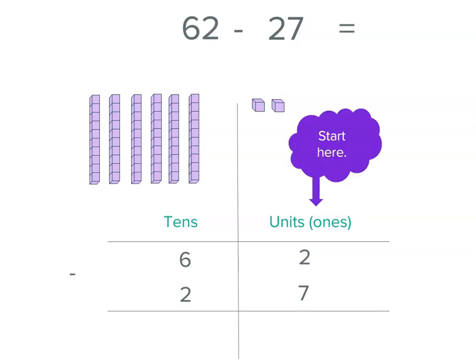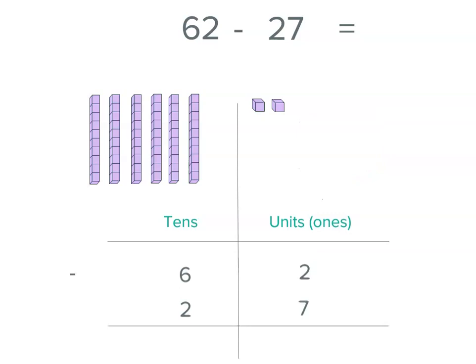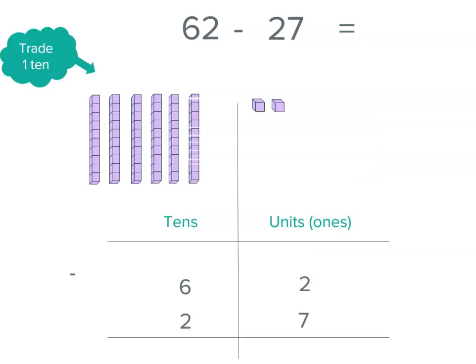And we need to take away 27. So remember, we start from our units place, 2 minus 7. Well, we can't actually do that, can we? So what we're going to do is we're going to do some trading. Let's trade one of those tens for 10 of the units.